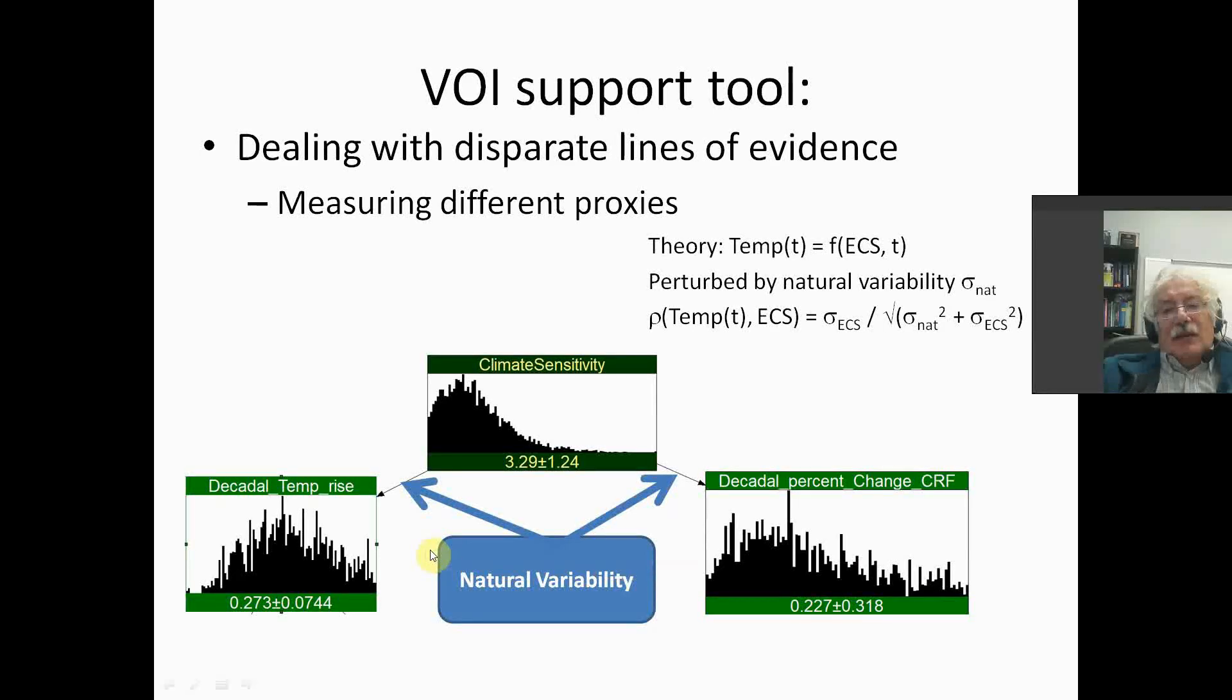Theoretically, temperature at time T is a deterministic function of ECS and T. If we knew with certainty the value of ECS, we would know with certainty what the global mean temperature would be at any time T.